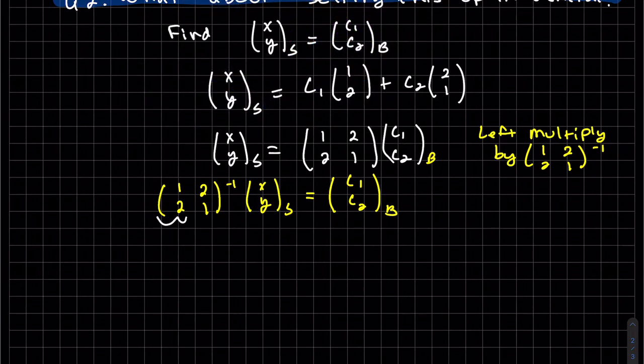We're going to call this the transformation matrix from S to B. The transformation matrix from the standard bases to a new bases, which happens to be our inverse in there. But there'll be, and this is a matrix, times my vector in S is equal to our new vector in basis B.